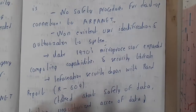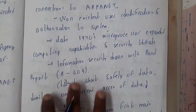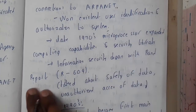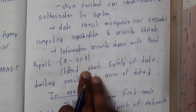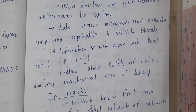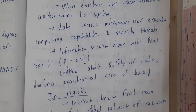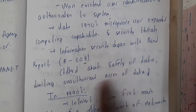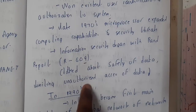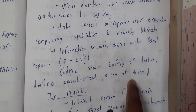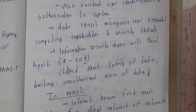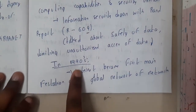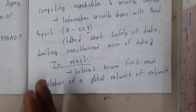After some years they moved on to a new standard — a report called the RAND Report R-609. This report was the one that started discovering about authentication. In that paper, the author talked about the safety of data and limitations of unauthorized access of data — what issues exist and what things need to be addressed were all discussed in that report.